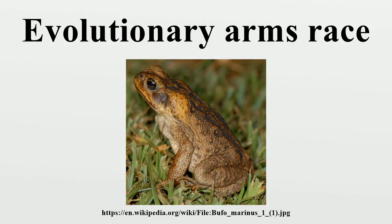Another example of runaway evolution in sexual selection is an elk's antlers. Having big antlers makes a male elk more likely to win a mate — in fact, having big antlers is a requirement to mate. As a result, elk evolve antlers that are incredibly costly to build, maintain, and fight with. By the end of the mating season, the average male loses 25% of his body weight due to fighting, which he has to make up before winter starts.